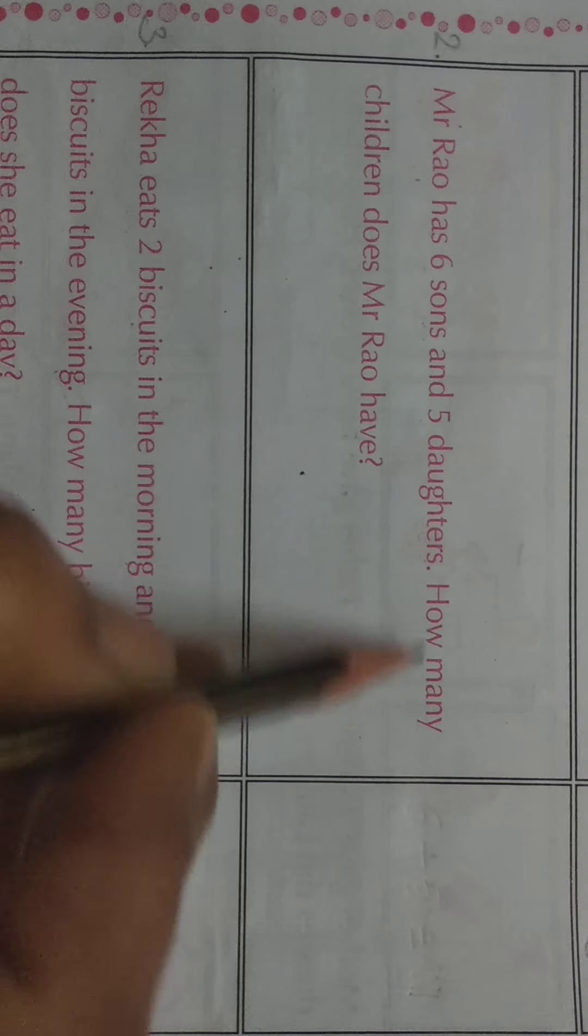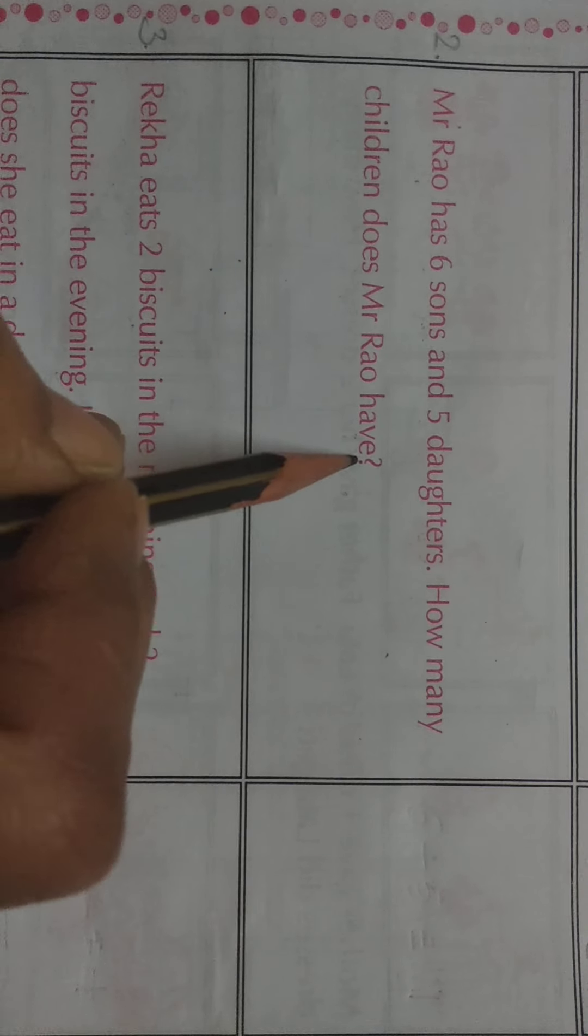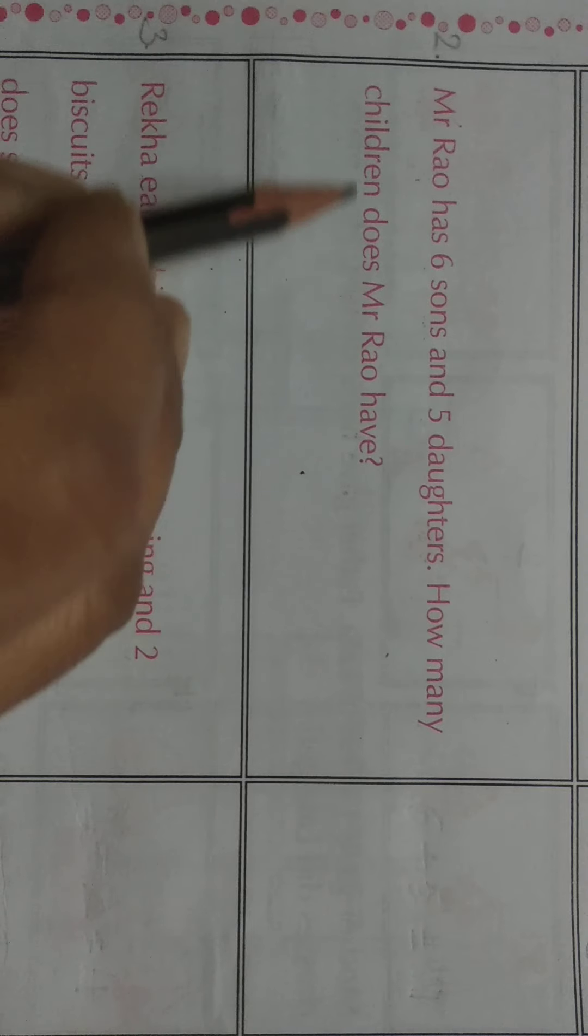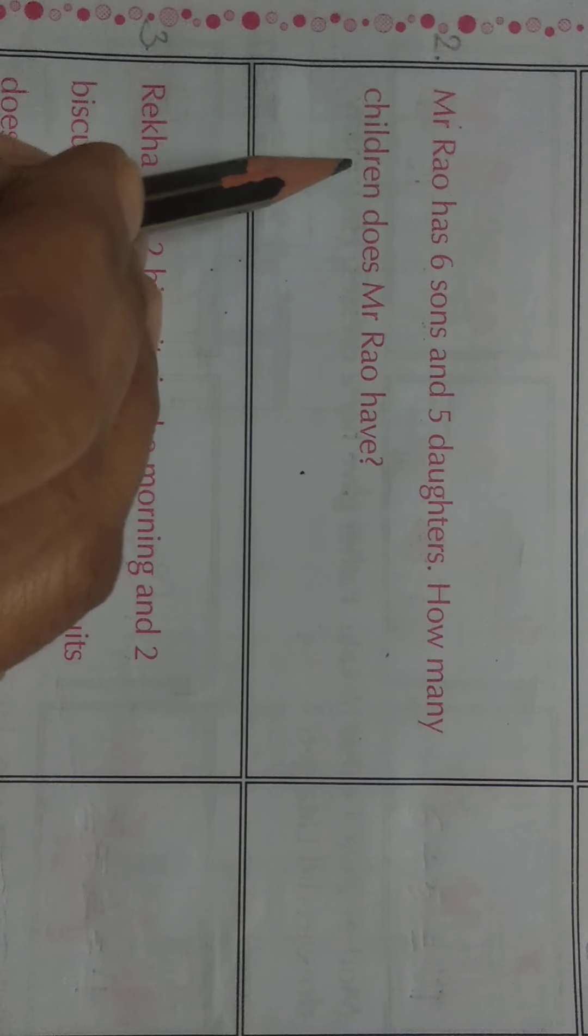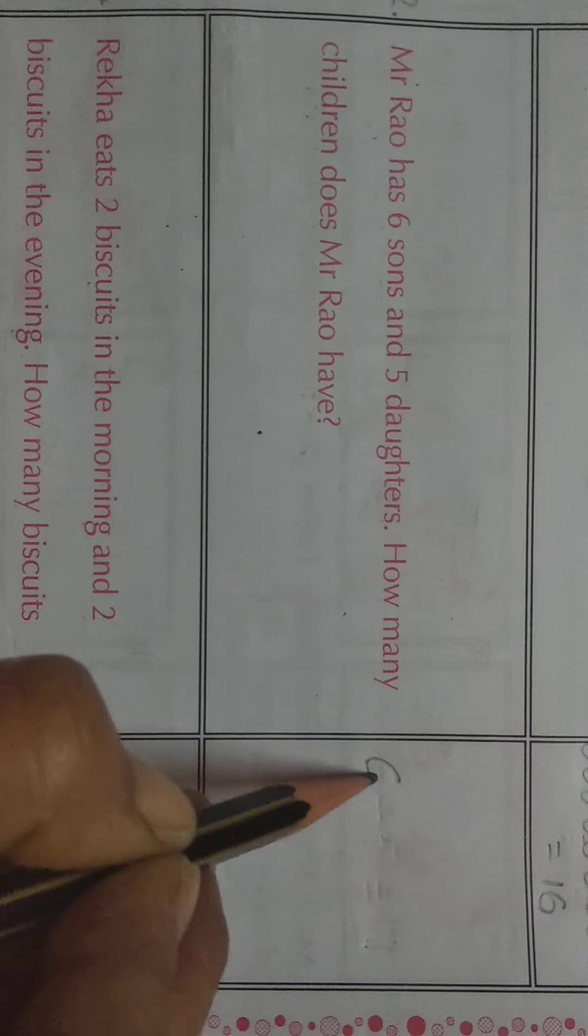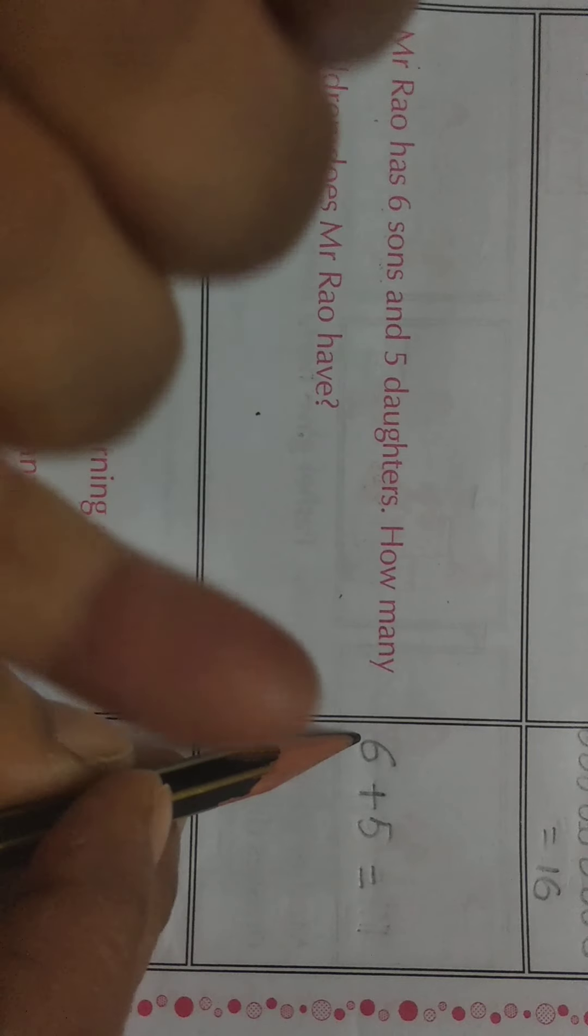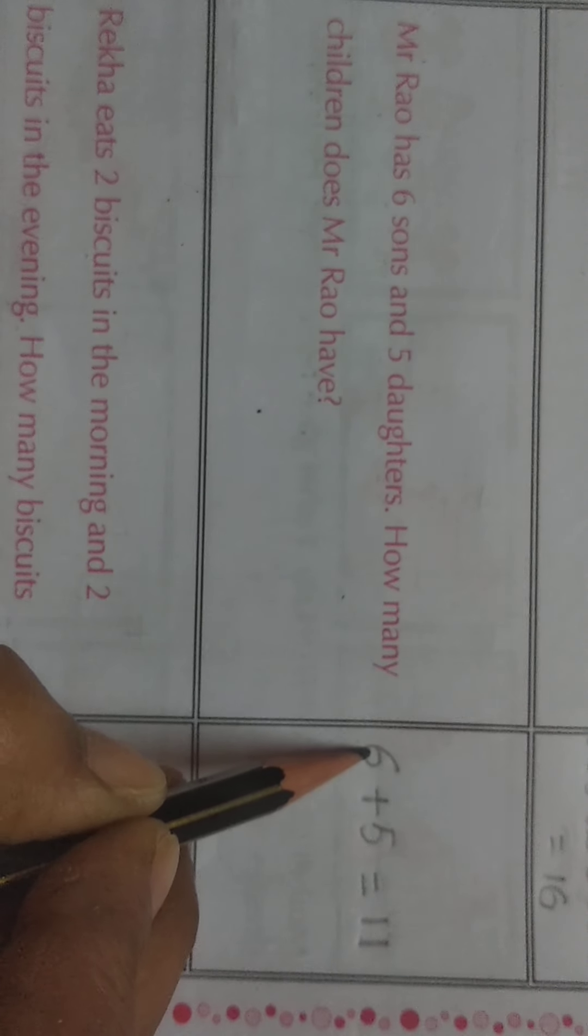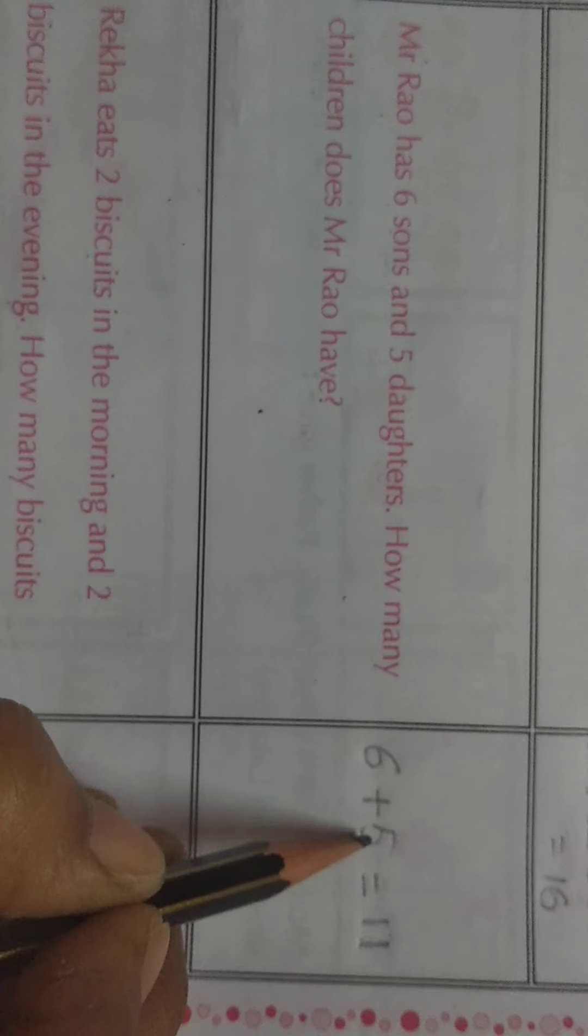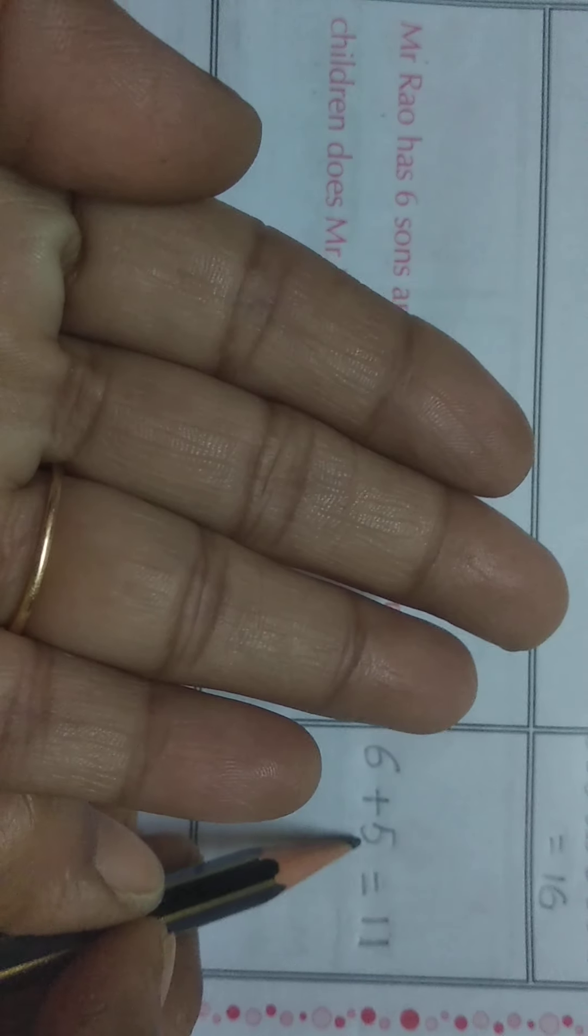Question pooch rahe hain, Mr. Rao ke paas kitne children means bachay hain? Kitne bachay hain, sons and daughters? Dono add karenge na, tabhi kitne bachay hain humko pata chalega. So 6 sons plus 5 daughters is equal to? After 6: 7, 8, 9, 10, 11. The answer is 11. We will keep first number in our mind and we will count 5 numbers. After 6, we will count forward and we will open 5 fingers, otherwise we will count 5 numbers. So the answer is 11.